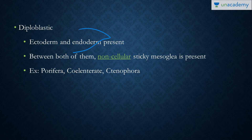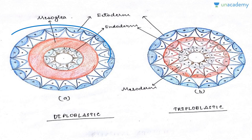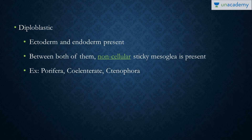I'll explain with the diagram. We can see that the outermost layer in the diploblastic ones is the ectoderm, and the inner one is the endoderm. Ecto means outer and endo means inner. This is filled by a jelly or glue-like fluid which is known as mesoglia. The examples of these diploblastic ones are Porifera — the sponges — and cnidarians, which are basically the jellyfish. We also have a different group known as comb jellies or ctenophores.